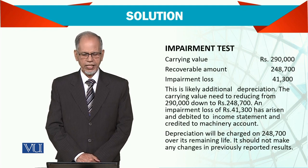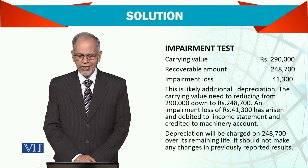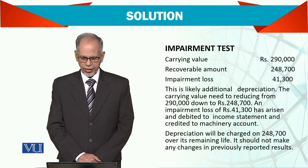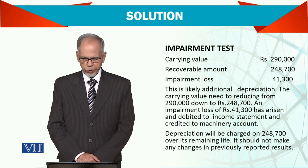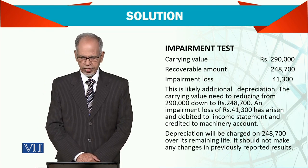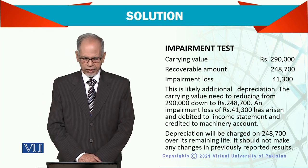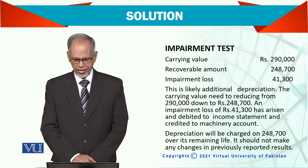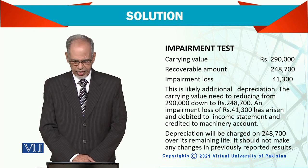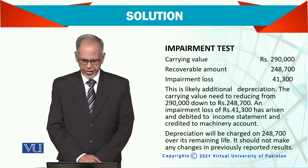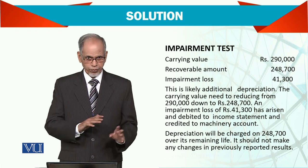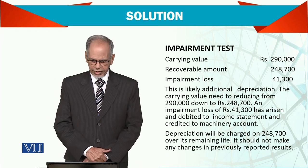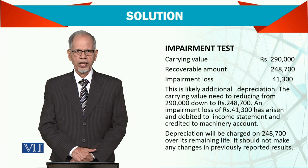This is like an additional depreciation. The carrying value needs to be reduced to $248,700, which is recorded as a debit to the income statement — that is the profit and loss account — and credited to the machinery account.